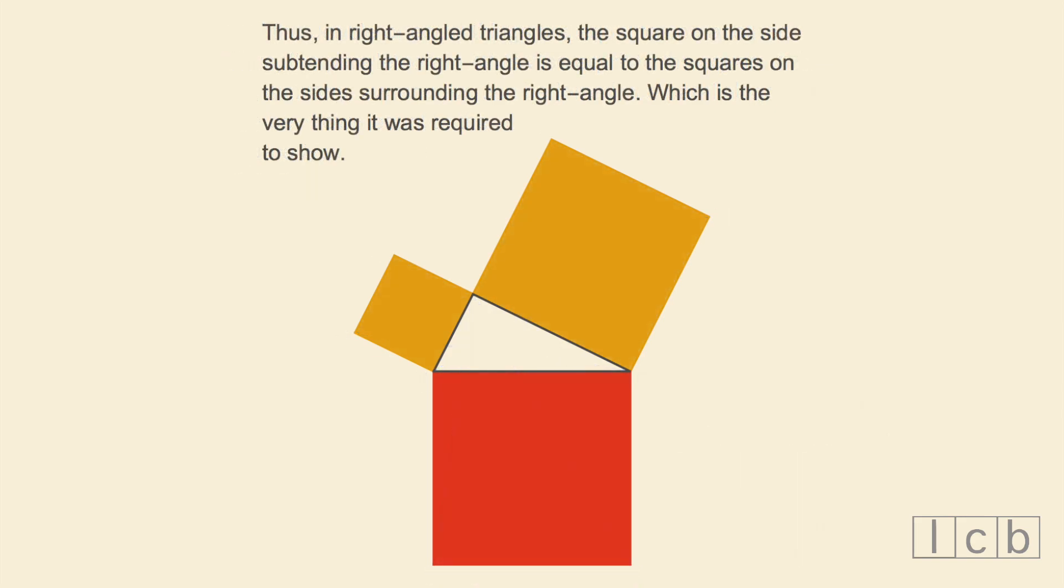Thus, in right angled triangles, the square on the side subtending the right angle is equal to the squares on the sides surrounding the right angle. Which is the very thing it was required to show.